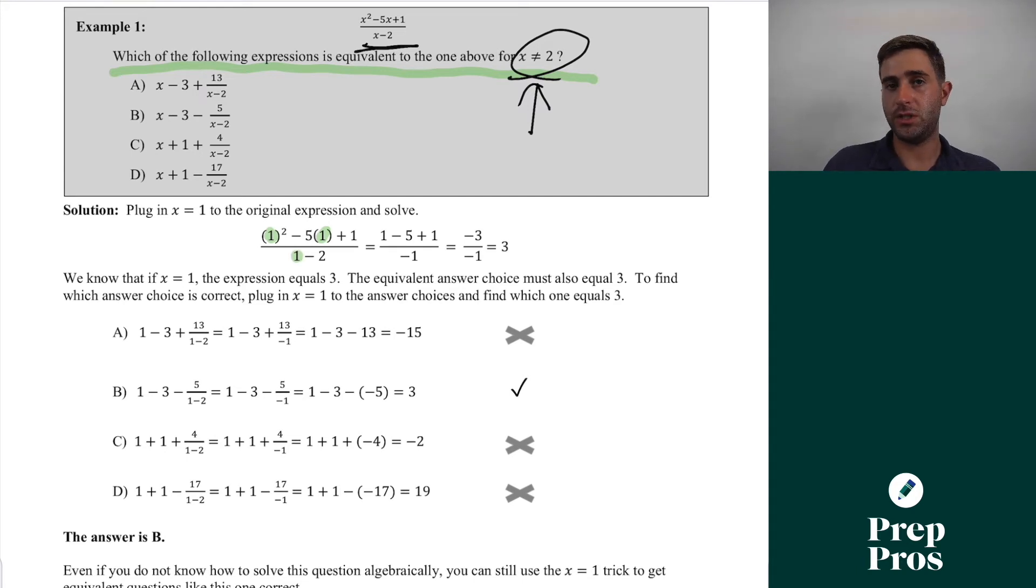Now from here, I'm just simplifying, doing my basic addition, subtraction, multiplication, and then I get to see what it equals. So I get one minus five plus one, which is going to equal negative three. And then I get one minus two equals negative one. So I have negative three over negative one, and this equals positive three.